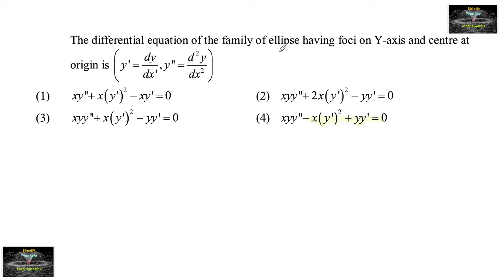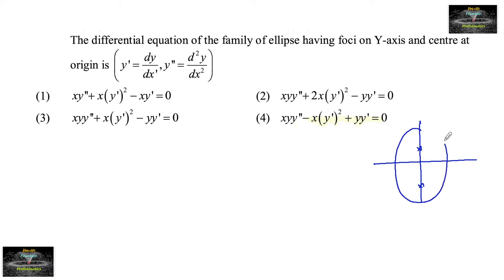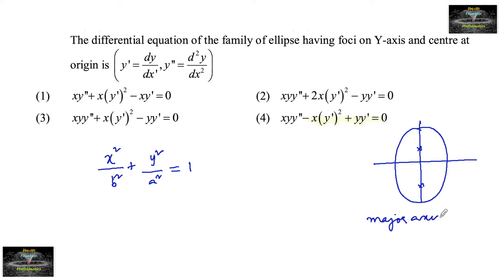We need to find the differential equation of the family of ellipses having foci on the y-axis and center at the origin. Since the foci are on the y-axis, we consider the equation x²/b² + y²/a² = 1, where the major axis is the y-axis. This is the equation of the ellipse as per the given condition.